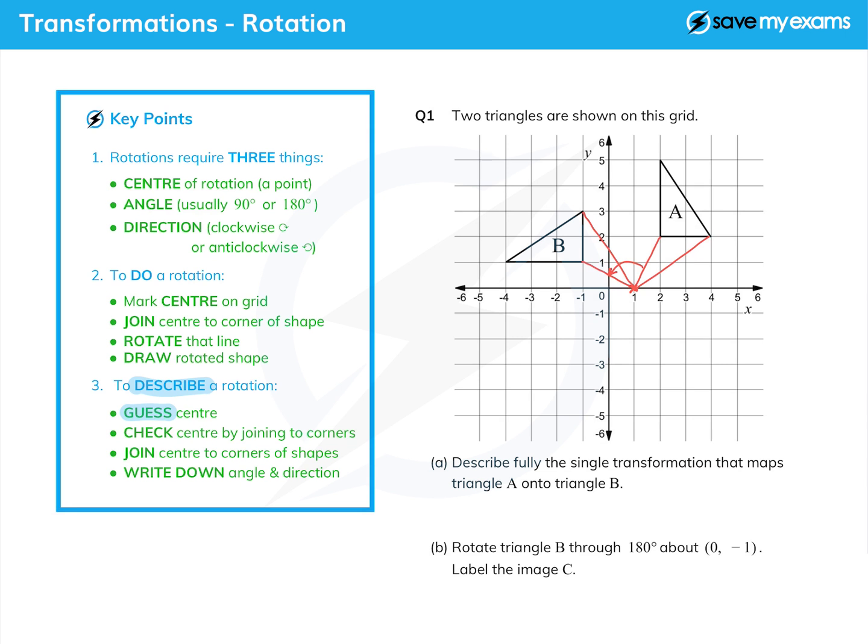We can now write down the single transformation. It is a rotation - you must write that down for one mark. Center - you must write this down for another mark - and we've decided it's (1, 0) on the grid.